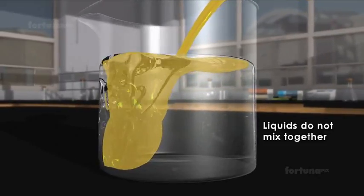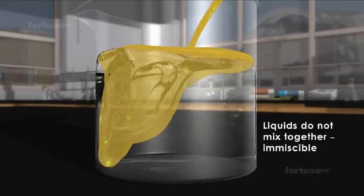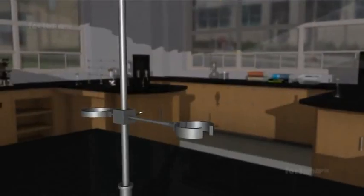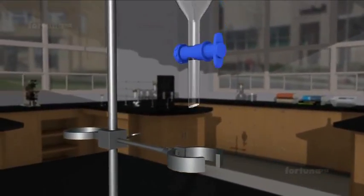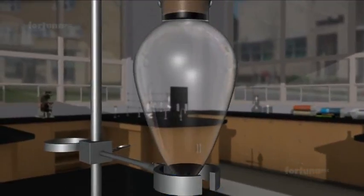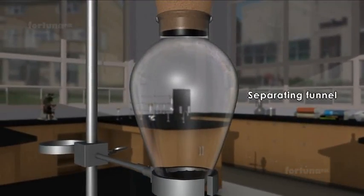and form a homogeneous mixture, we say they are immiscible. A mixture of immiscible liquids can be separated using special laboratory equipment called a separating funnel.